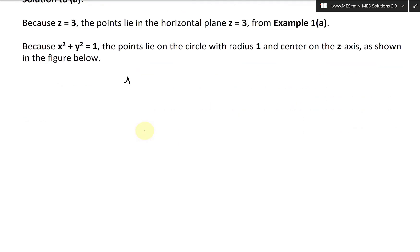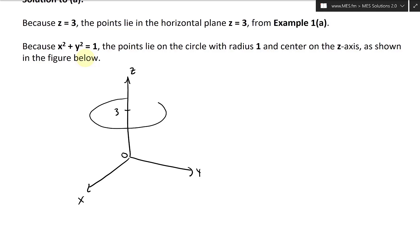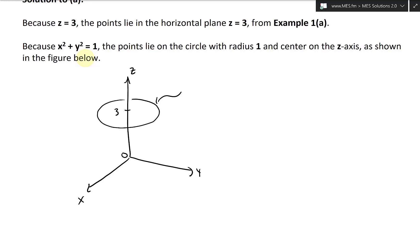If we draw this out, we have our Z axis, our Y axis, our X axis, and the origin. We mark the point 0.3 on the Z axis, and on that plane Z equals three, x squared plus y squared equals one is just a circle. So we draw a circle there — that's our circle. The equations are: x squared plus y squared equals one, and Z equals three.